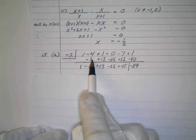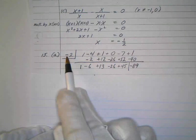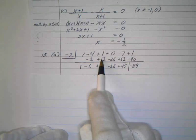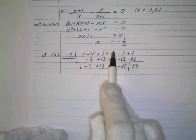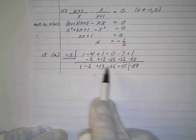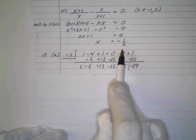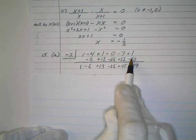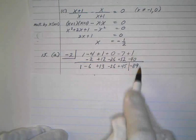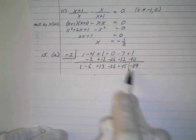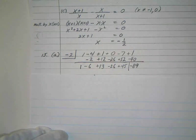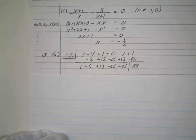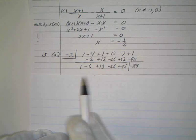What's negative 2 times 1? Negative 2. Add these, I get negative 6. Negative 2 times negative 6 is 12. Add these, I get 13. That's negative 26. Add those, I get negative 26. That's a positive 52. Add these, I get 45. That's a negative 90 when I multiply. And add these, I get negative 89. And that's going to be your remainder. If it wasn't there evenly, you'd have no remainder and it would be a factor. Okay? So that's what we call synthetic division.